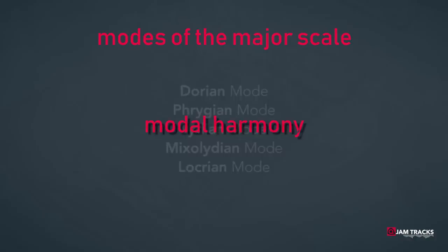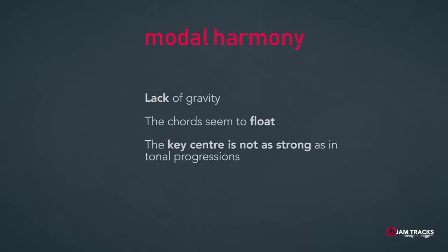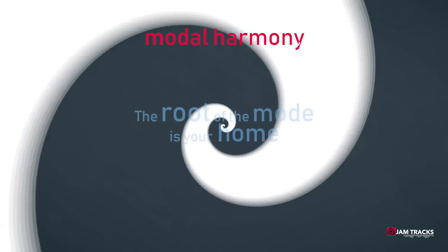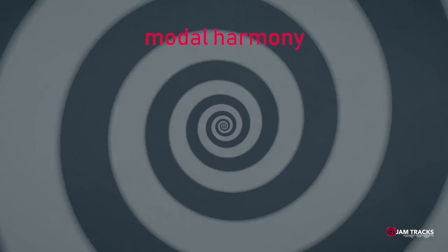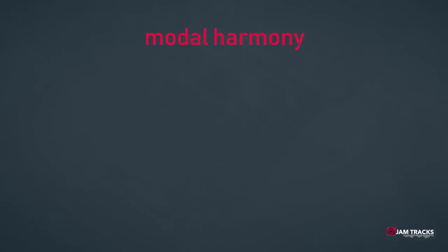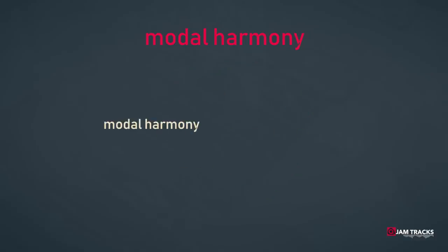Modal harmony has a lack of gravity — it almost floats, and the key center is not as strong as in tonal progressions. We must convince the listener that the root of the mode is the most 'home' sound; without this, the tune will simply begin to resemble a common major or minor harmony. We must be cautious, because all the modes have a tendency to resolve to the relative minor or major key. So D Dorian, for example, becomes C major if we use the wrong chords from the Dorian scale. Modal harmony needs a totally different approach.